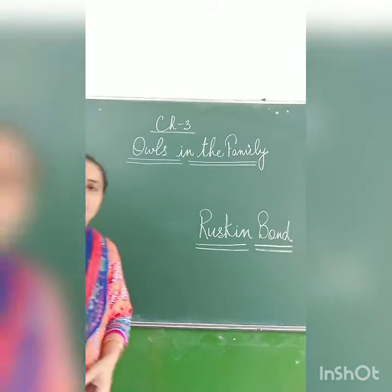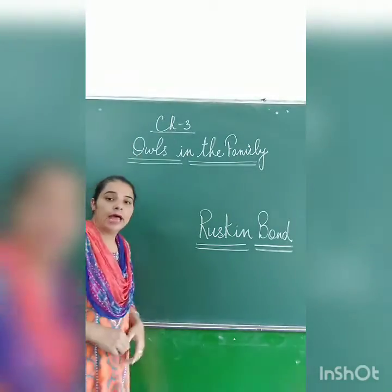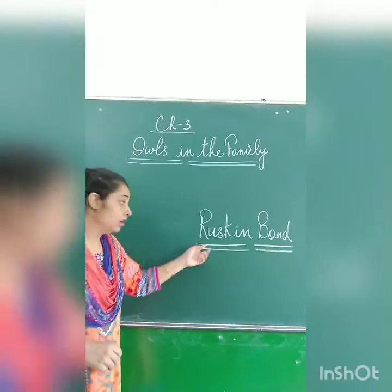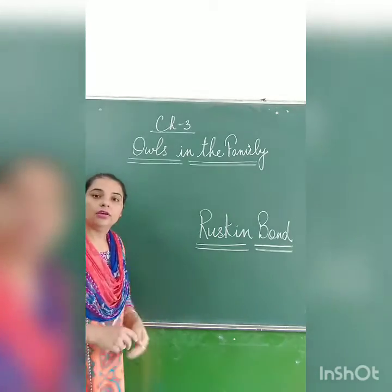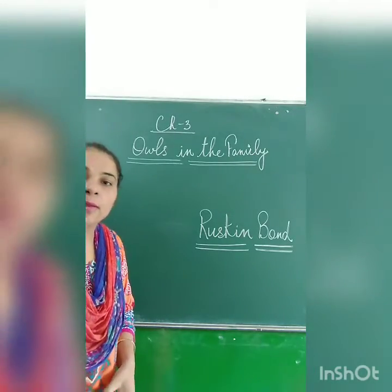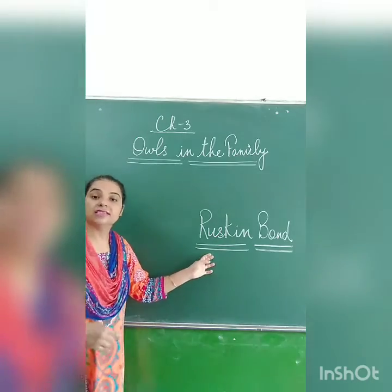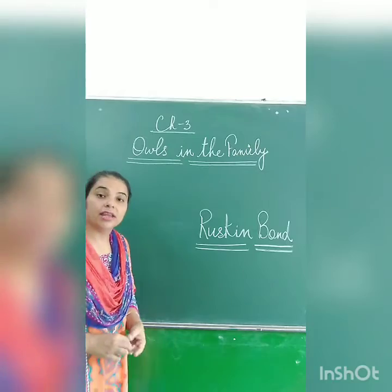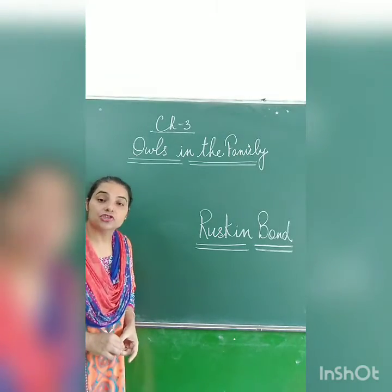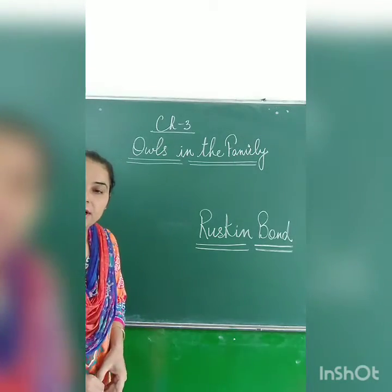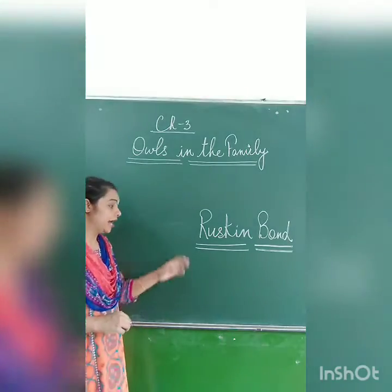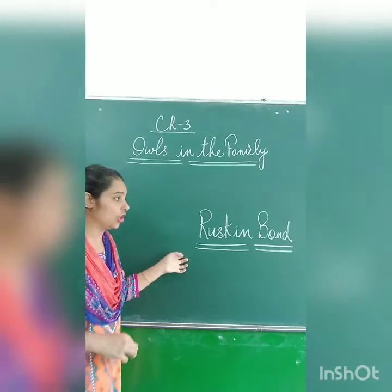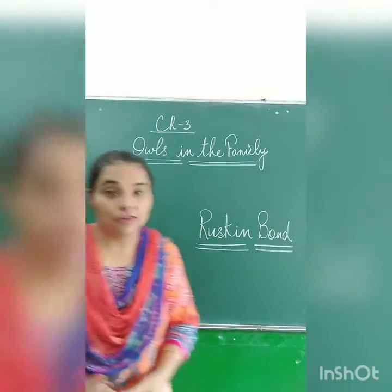The name of this chapter is Owls in the Family and the writer of this story is Ruskin Bond. Who is the writer? Ruskin Bond. He is a very famous story writer and he has written many stories, mainly children's stories. And in this chapter, he is talking about nature. He is a nature lover also.